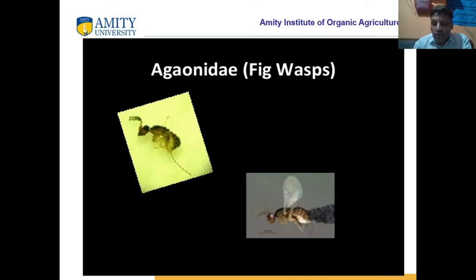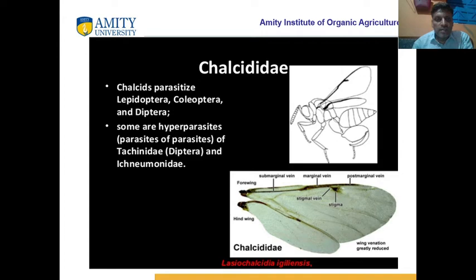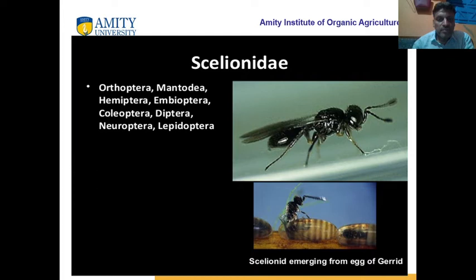Agaonidae are called fig wasps — they live on fig plants and can damage the figs. Chalcididae are a very important family and are parasites of Lepidoptera, Neuroptera, and Diptera — these hymenopterans are parasites of Tachinidae, which is Diptera. Eupelmidae — Eulophidae are parasites of Orthoptera, Mantodea, Hemiptera, Neuroptera, Lepidoptera, and Diptera. So they are parasites of many other organisms.